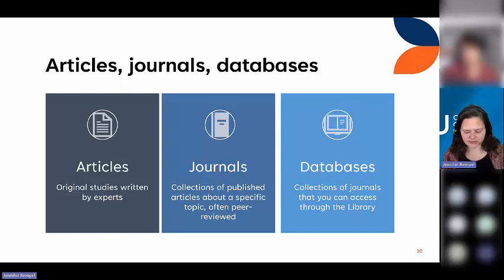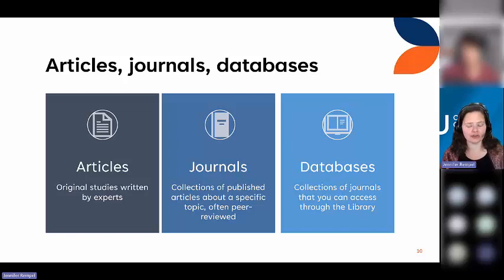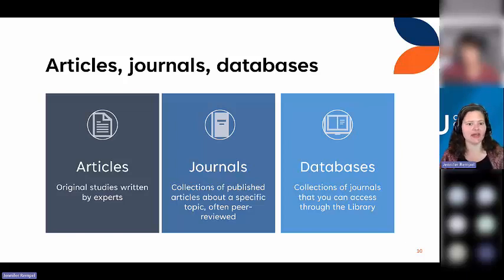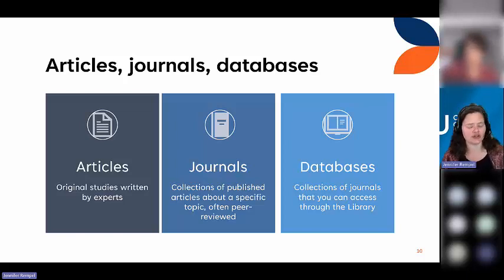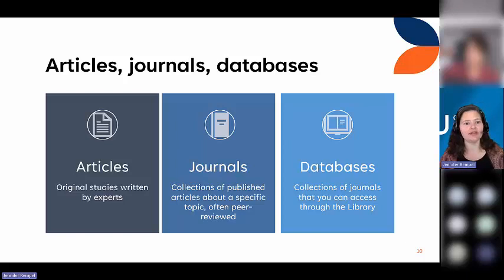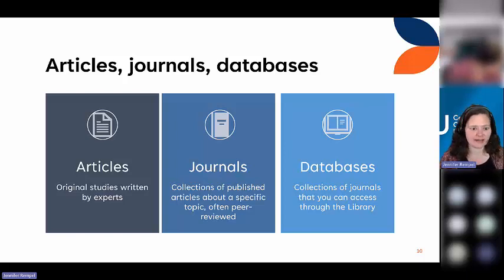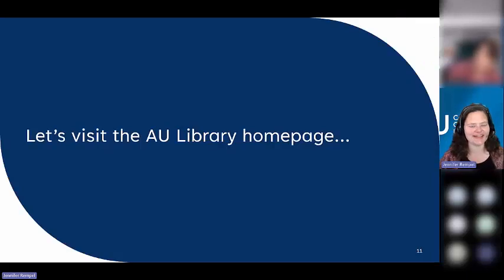Databases are essentially collections of journals made available in electronic format — basically a searchable index. Some journal databases include full text; some don't; some have a mixture of full text and citations. Through AU Library you have access to over 200 journal databases, including more than 107,000 individual journals, which adds up to millions of articles. You have access to a wide range of material, though it can be challenging to navigate.